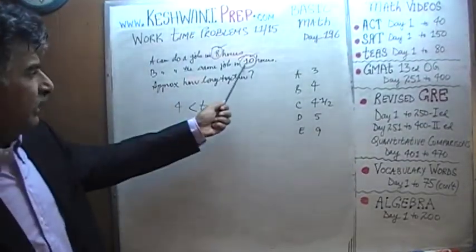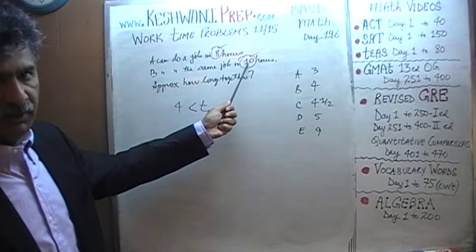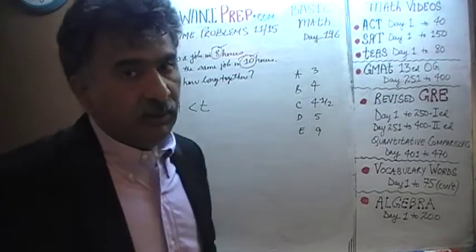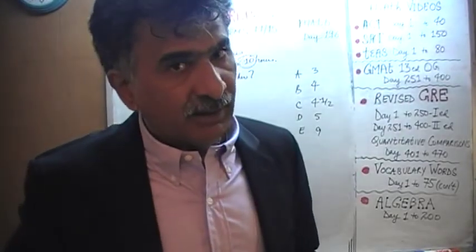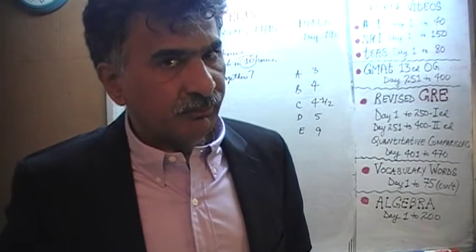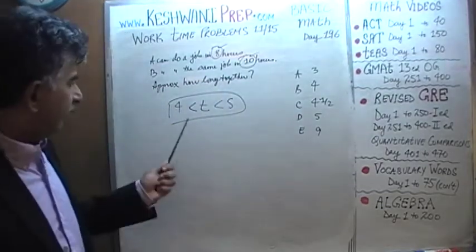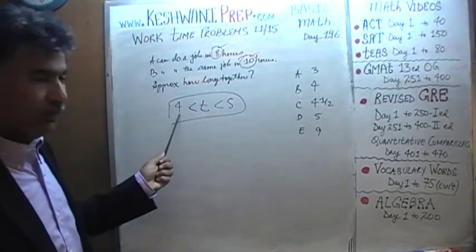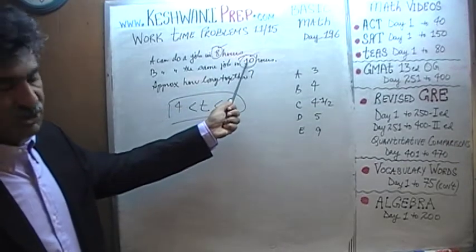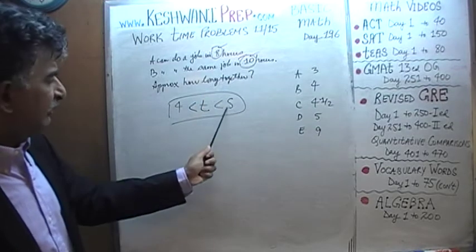The exact same logic applies in reverse. If A takes 10 hours and B takes 10 hours, then in 5 hours they could each do half the job. But A does not take 10 hours — A only takes 8 hours — which means in reality it will not take as long as 5 hours. It will be less than 5 hours. The correct answer has to lie between 4 and 5.